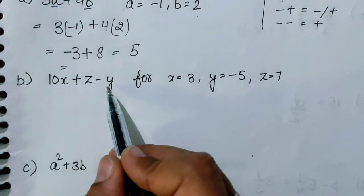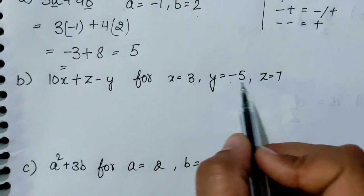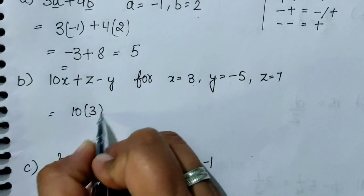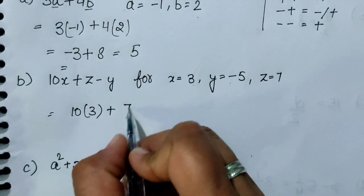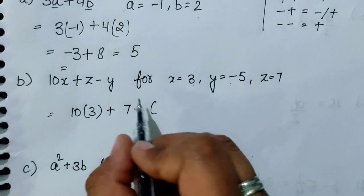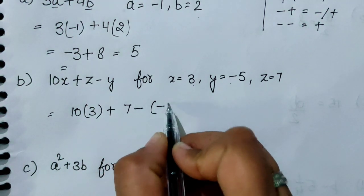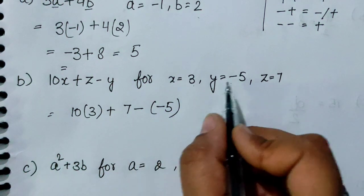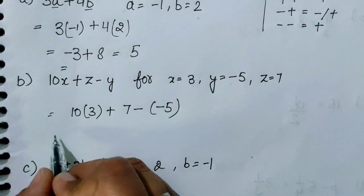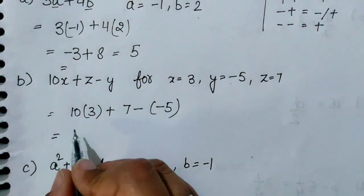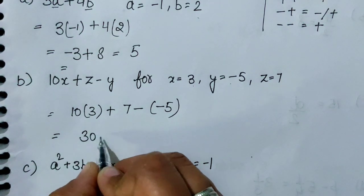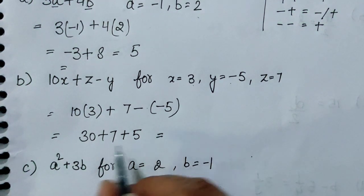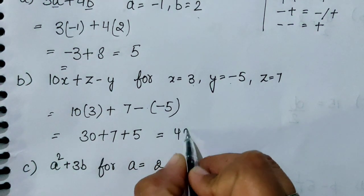X की value 3 है और Z 7 है। So X की जगह हम रखेंगे 3, plus Z की value है 7, minus और Y की value है minus 5। Minus को bracket में रखेंगे ताकि confusion न हो। So 3 जा 30, plus 7, minus minus हो जाएगा plus। आपका यहाँ पर answer आ गया 42।